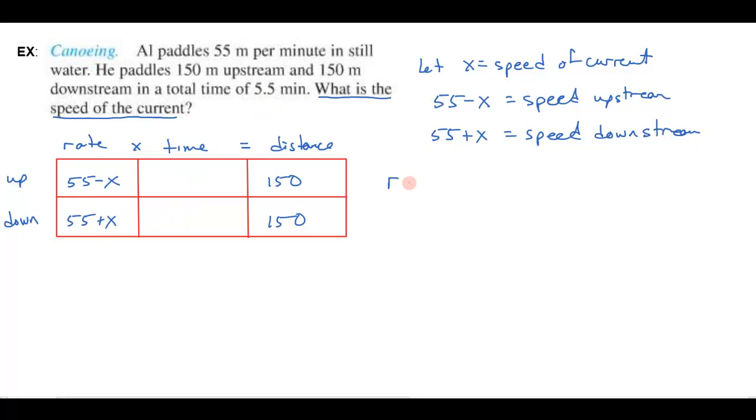I don't know the time up and the time down, but I do know the total time is five and a half. Since the rate times the time is the distance, the time has to be the distance over the rate. So the time up has to be 150 divided by 55 minus x. Likewise, the time going down has to be 150 divided by the rate down, 55 plus x.